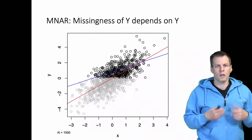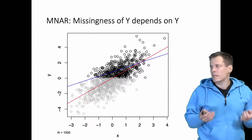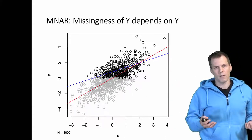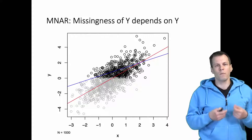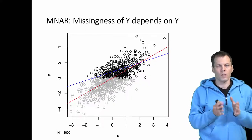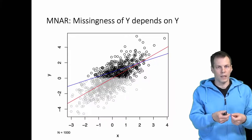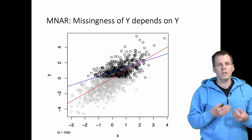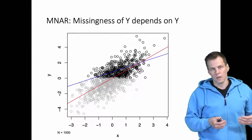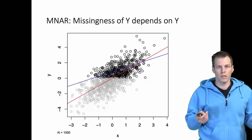The Heckman selection model and selection models more generally address the missing not at random case — the worst-case scenario in missing data. This is when you have missingness in the dependent variable and whether the observation is missing depends on the value that is missing. Since the missingness depends on the missing value itself, we can't test the missing data mechanism — it must be assumed based on theory.